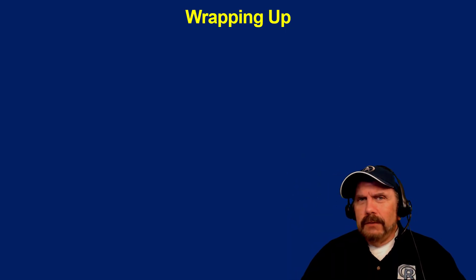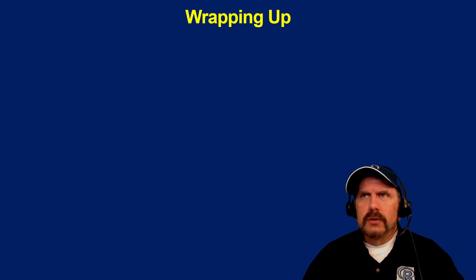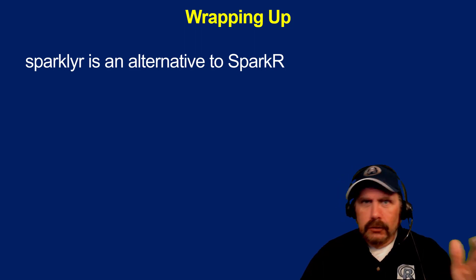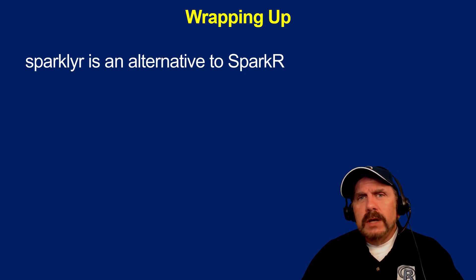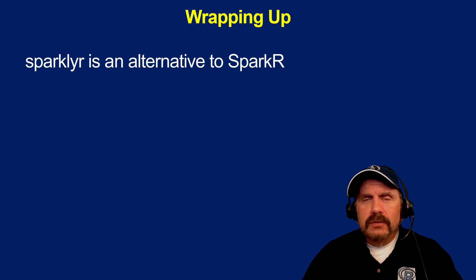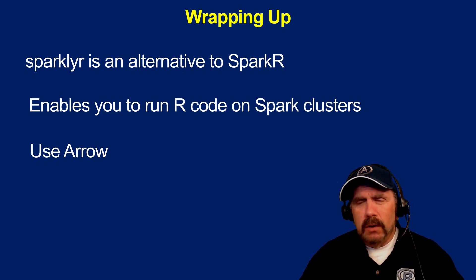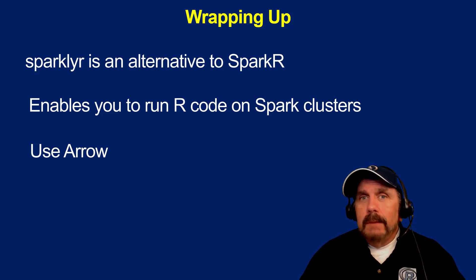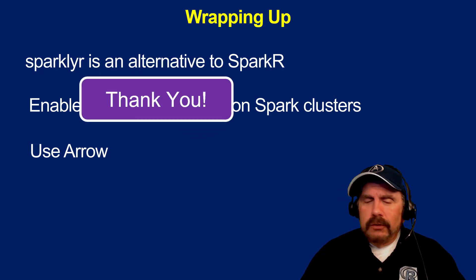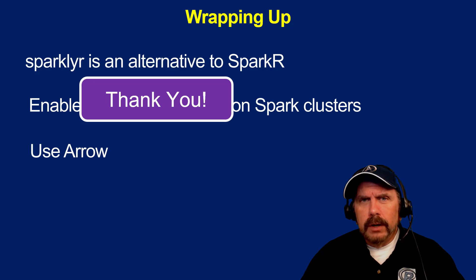Wrapping up - that was a lot to cover, but we covered a lot very quickly. There's a lot more, so take a look at the functions in the documentation - link in the description. SparklyR is an alternative to SparkR, allowing you to use the R programming language on a Spark cluster for distributed processing. You also want to use Arrow, which I covered in depth in my last two videos - without it, you're not going to get very good performance. Make sure you install it and use it. Like, share, subscribe, consider supporting me on Patreon. Until next time, we're all in this together. Thank you.